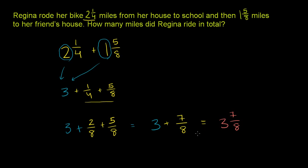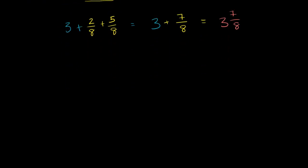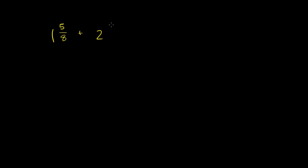I want to make one thing very clear. So far, when we've been adding these mixed numbers, the fraction part always ended up as a proper fraction — the numerator was smaller than the denominator. But I want to do a quick example to show you what you do when the numerator is not smaller than the denominator.